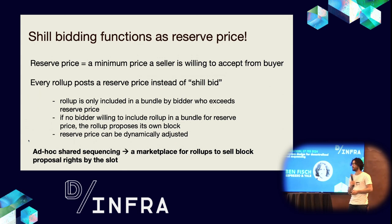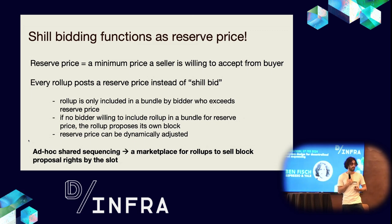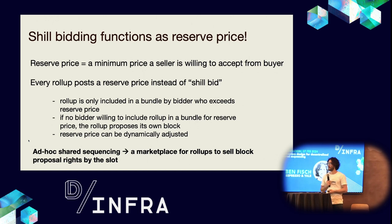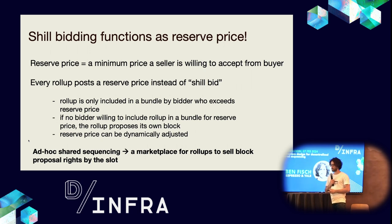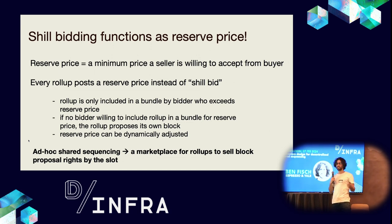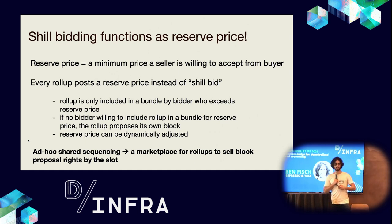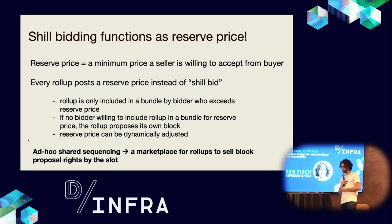Shill bidding can also be thought of as functioning as a reserve price. A reserve price is a minimum price that a seller is willing to accept from a buyer. Every rollup can post a reserve price instead of shill bidding on itself, and a rollup will only be included in a bundle by a bidder who exceeds the reserve price. If no bidder is willing to include a rollup in a bundle at the reserve price, the rollup will just propose its own block — defaulting to what is done today. This is dynamic, and the reserve price can be dynamically adjusted. We could call this ad hoc shared sequencing.